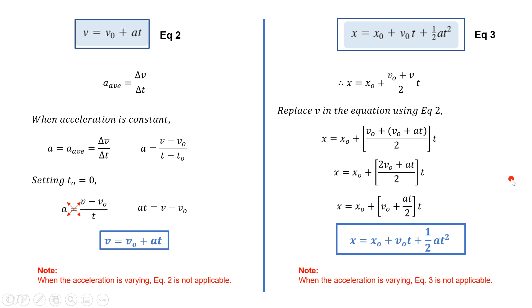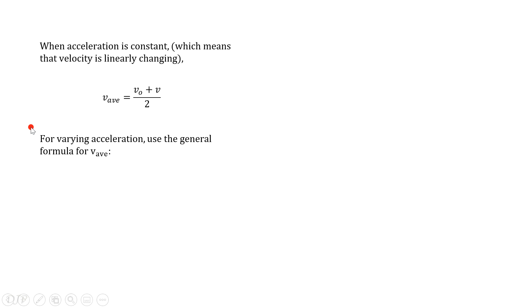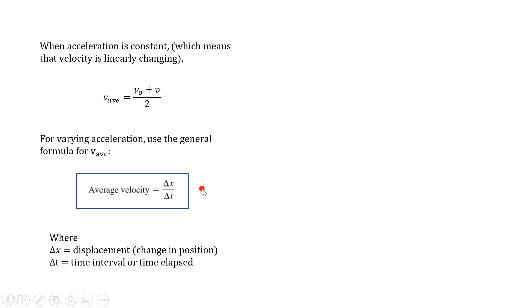We introduced a new formula for average velocity. The concept of average velocity might cause some confusion when we proceed with advanced topics, especially when the path of motion is no longer along a straight line. To clarify: when the acceleration is constant, you may use the arithmetic mean formula. But for varying acceleration, use the general formula — average velocity equals displacement over time interval.